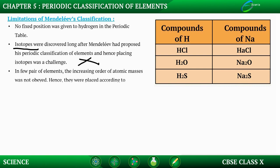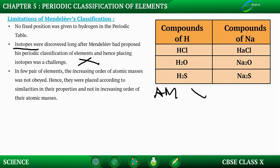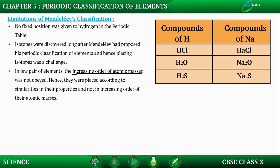In a few pairs of elements, the increasing order of atomic masses was not obeyed, so they were placed according to similarities in properties rather than increasing atomic mass. Whenever the increasing atomic mass order was not followed, properties were used as the basis for arrangement in the periodic table.